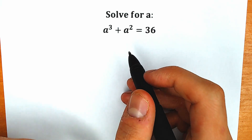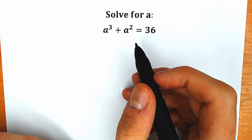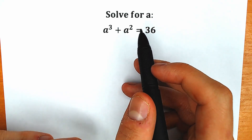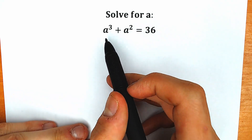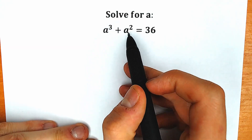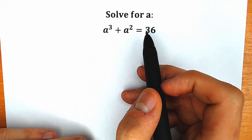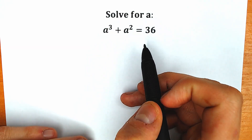Hello everyone, happy to see you here. Welcome back to my channel, Hire Mathematics. Today we have a very interesting algebra question. We have a cube plus a square equal to 36, and we need to find a.